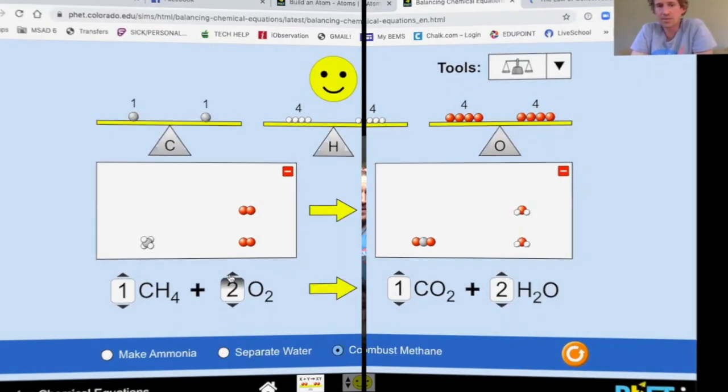For your homework tonight, you need to take a look at the balancing chemical equations simulator. Click on the game, and I want you to complete all three levels and take a screenshot of when you complete those levels. It'll give you a score with some stars in it.